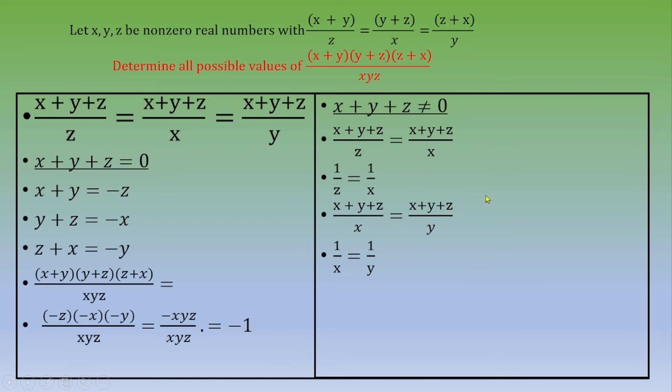By combining these two equations, we get 1/x = 1/y = 1/z, which means x = y = z.